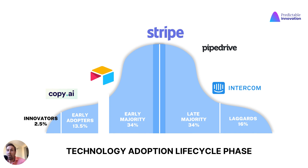If we take a look at Stripe as an example of payment platforms, that category is well past the early majority — I would say it's in the late majority in the United States. Then we have CRM; PyDrive is the example SaaS here. They are very much in the late majority, and CRM market penetration is really high in the United States. Then we have customer-facing chat solutions, like Intercom. According to some portals, market penetration is well past 85%, so I would say that market category is in a late market.